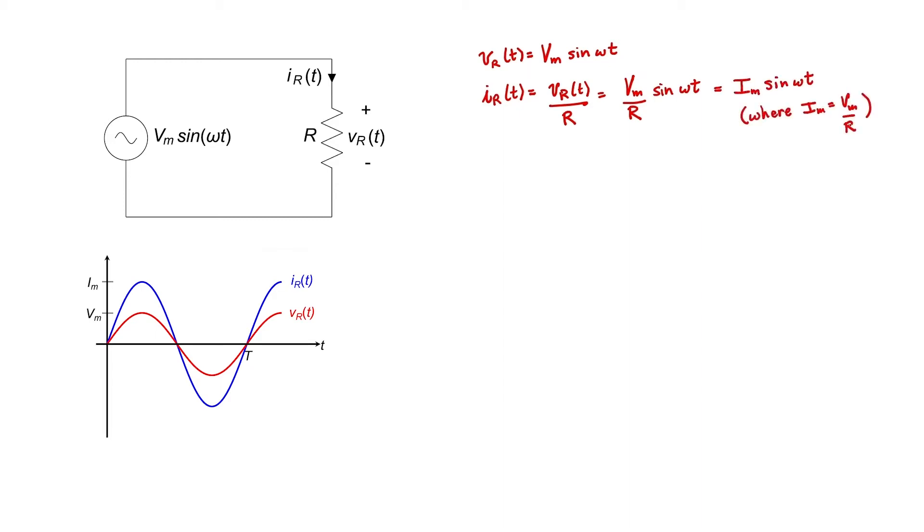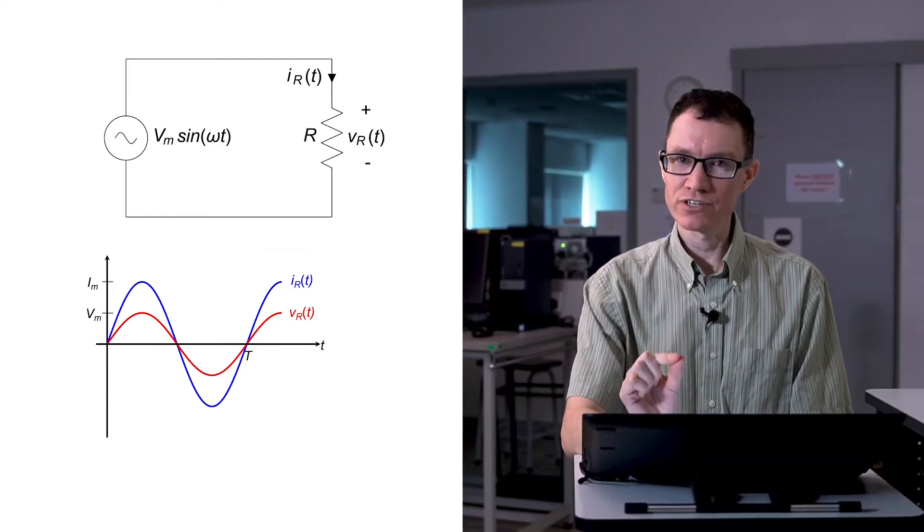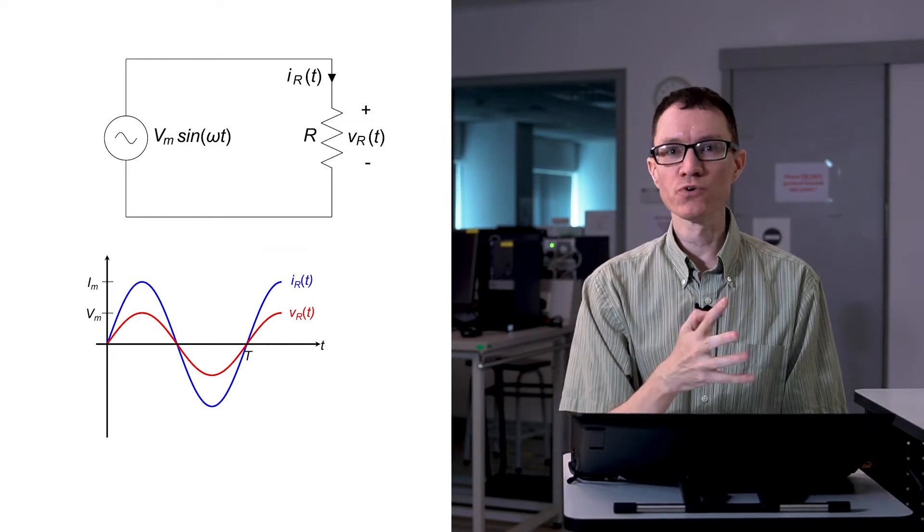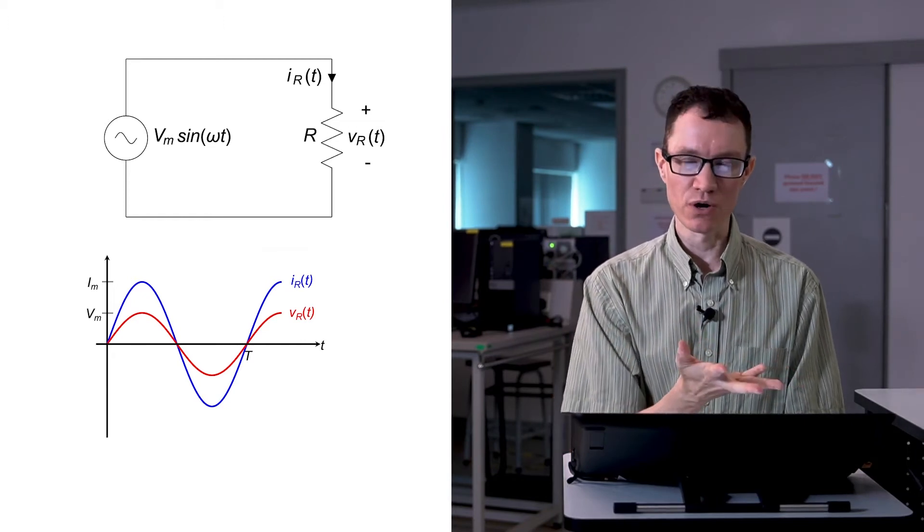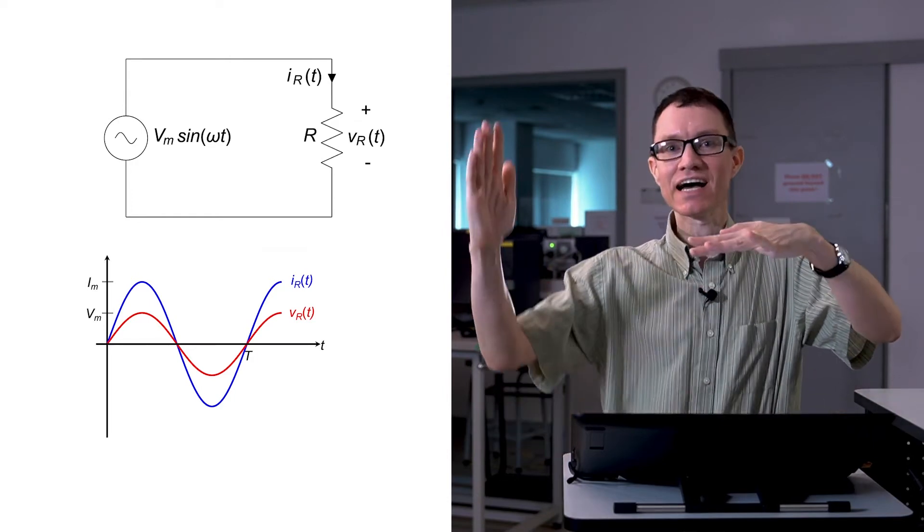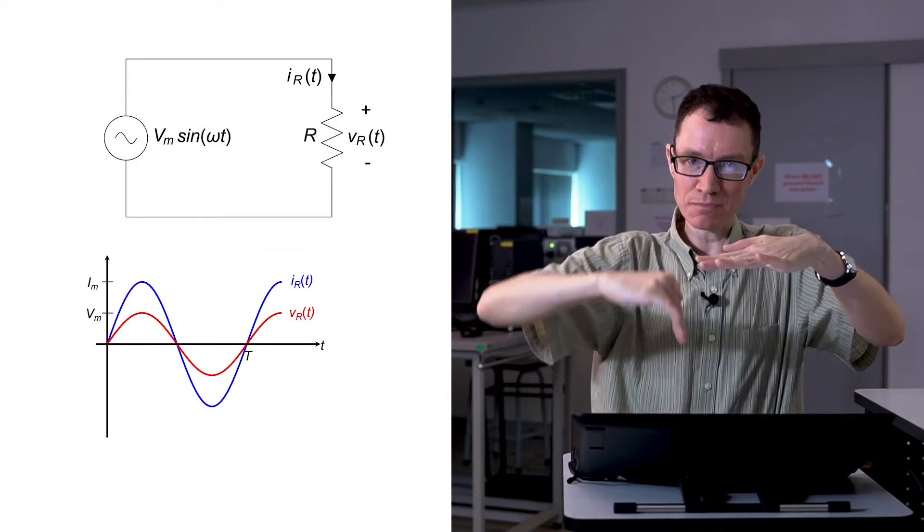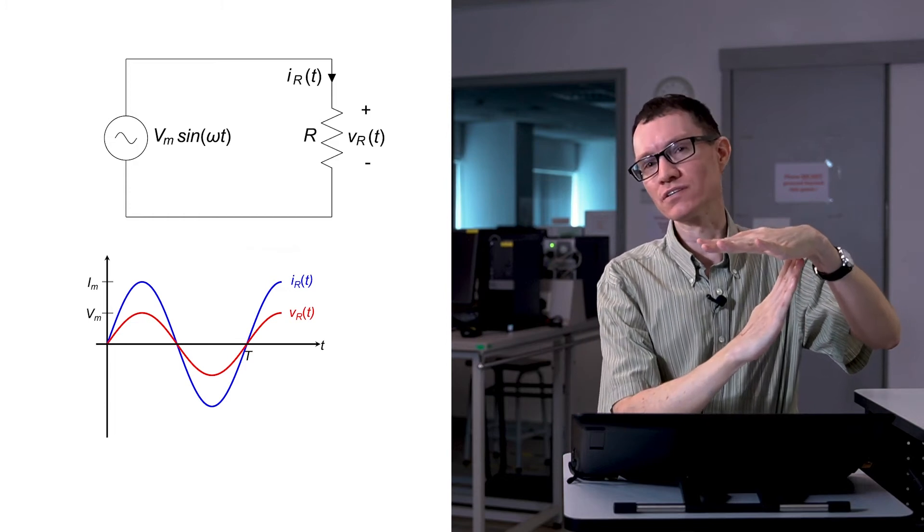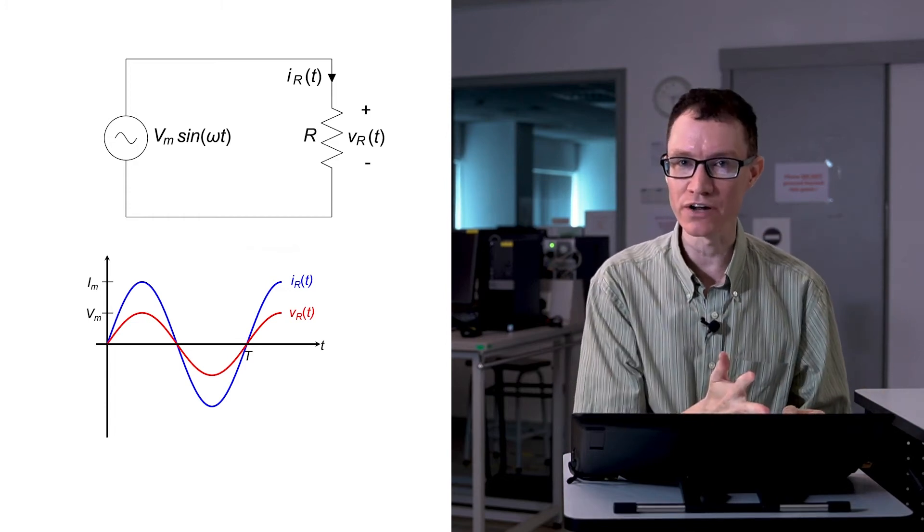There's something interesting about both of these curves that I'd like you to notice, and that is that the averages are zero. The average voltage is zero, the average current is zero. If you look carefully at the curve for voltage, it spends half of its time above the center line, and it spends half of its time below the center line. The average voltage is just zero. Same thing with the current.